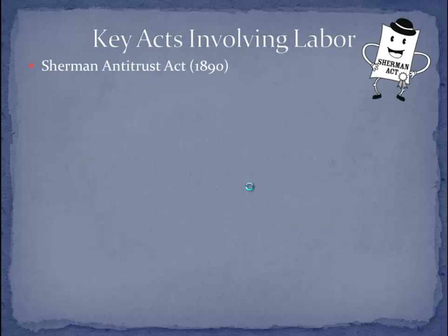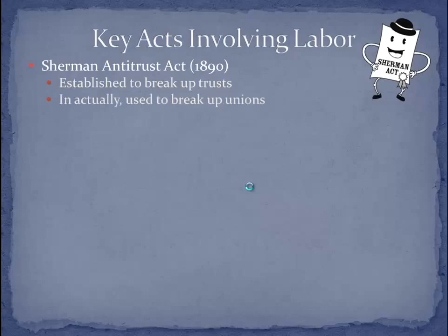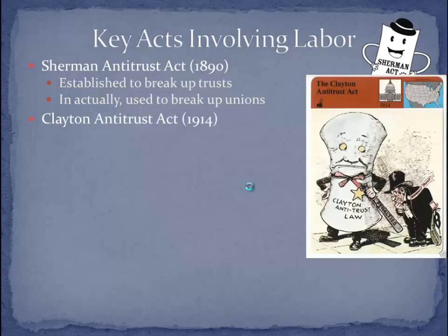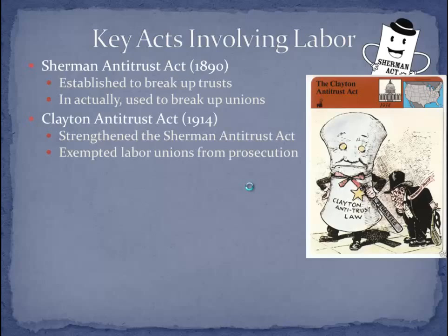A couple of acts you absolutely must know. First is the Sherman Antitrust Act of 1890. While its purpose was to break up monopolies and trusts, in actuality it was used by clever lawyers to break up unions — not its intended purpose, but that is what happened. Twenty-four years later, the Clayton Antitrust Act strengthened the Sherman Antitrust Act, and this time the government got it right: labor unions were exempted from prosecution, so unions could no longer be broken up under an antitrust act.